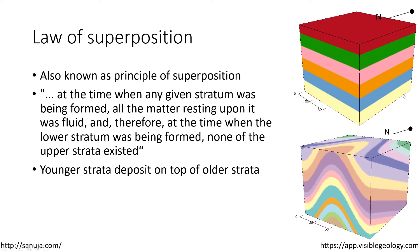The yellow layer is oldest, and let's say the green layer is youngest. The orange layer is older than the green but younger than the yellow. So younger strata always deposit on top of older strata. Even when there is folding and other events — such as a plunging fold with different layers — the blue layer is much older than the purple layer sitting on top of it. Multiple geologic events may occur, but the fundamental principle of superposition still stands.